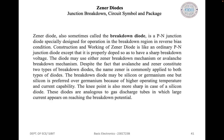Zener diodes — junction breakdown. When a junction diode is reverse biased, there is normally only a very small reverse saturation current IS on the reverse characteristics. When the reverse voltage is sufficiently increased, the junction breaks down and a large reverse current flows. If the reverse current is limited by a suitable series-connected resistor, the power dissipation in the diode can be kept to a level that will not destroy the device. In this case, the diode may be operated continuously in reverse breakdown.